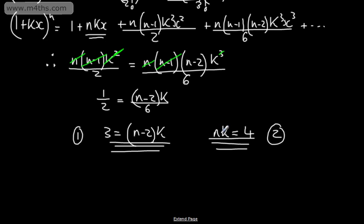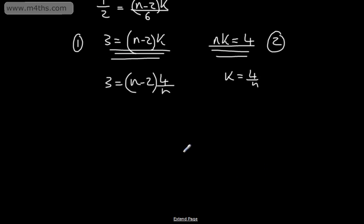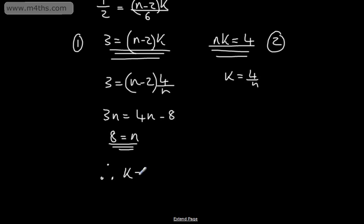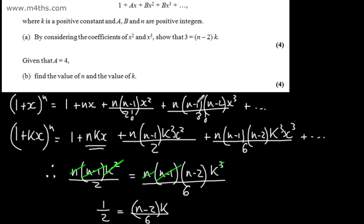From equation 2, k equals 4/n. Substituting into equation 1: 3 equals (n−2)·(4/n), giving 3n equals 4n minus 8. Adding 8 and subtracting 3n from both sides gives n equals 8. Substituting back, k equals 4/8, so k equals 1/2. We've found n equals 8 and k equals 1/2.